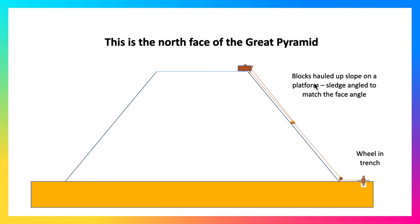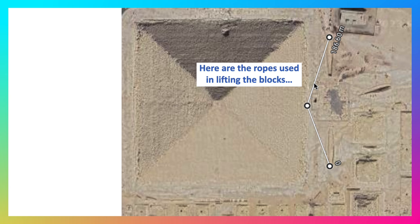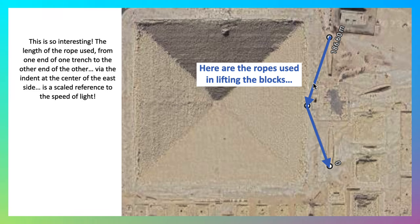The sledge angle matches the face angle of the Great Pyramid just to make it easier. Here are the ropes used in lifting the blocks, and interestingly enough their length is 186.6 meters. That's interesting because that's a scale reference to the speed of light.